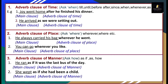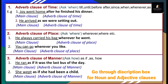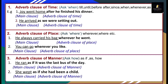Our first type is adverb clause of time. We can ask the question 'when'. It is denoted by subordinators: till, until, before, after, since, when, whenever, as, as soon as, while. Example: 'Joy went home after he finishes dinner.' 'Joy went home' is your main clause. 'After he finishes dinner' is your subordinate clause. When I ask 'when did Joy go home?', the answer is 'after he finishes dinner'. This is your adverb clause of time.